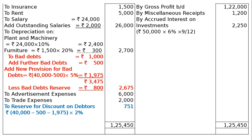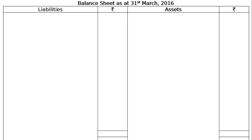After totalling the credit side at Rs 1,25,450, we deduct all expenses on the debit side and find the net profit carried down as Rs 78,824. We then move to the balance sheet as at 31st March 2016.